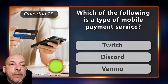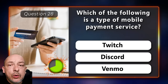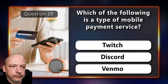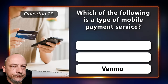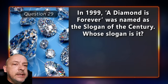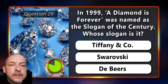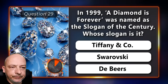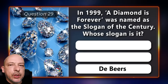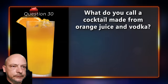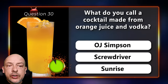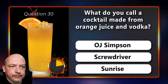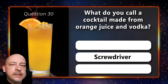Which of the following is a type of mobile payment service — Twitch, Discord, or Venmo? The answer is Venmo. In 1999, 'A Diamond is Forever' was named slogan of the century — whose slogan is it: Tiffany and Company, Swarovski, or De Beers? It's the De Beers slogan. What do you call a cocktail made from orange juice and vodka — an OJ Simpson, a screwdriver, or a sunrise? It is a screwdriver.